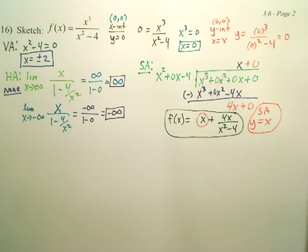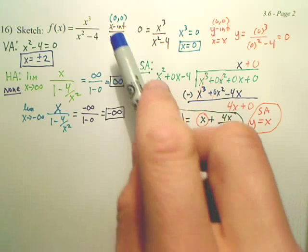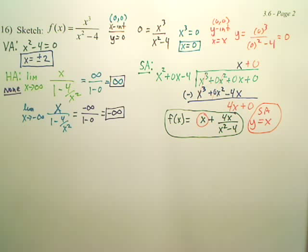Okay, so we have all our asymptotes. Our next step is, we got our intercepts, we got our asymptotes, our next step is to find our extrema.